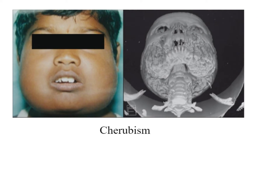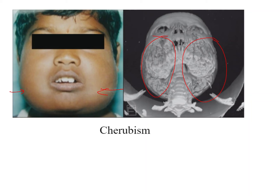Now talking of cherubism — cherubism looks like this: bilateral swelling of the mandible with too much immature bone present in that area. It usually starts at the age of two to five years, and then the diagnosis is made at around 10 to 12 years when the features are very evident. The patient will appear very plump with cherub-like cheeks — the cherub being the angel figure. There is bilateral symmetric expansion of the posterior mandible.